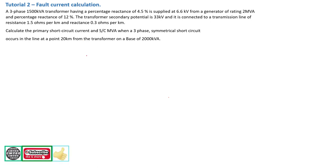This is tutorial 2. The problem statement says: a three-phase 1,500 kVA — that's 1.5 MVA — transformer having a percentage reactance of 4.5% is supplied by a 6.6 kV generator rated at 2 MVA with a percentage reactance of 12%. The transformer's secondary potential is 33 kV, making it a step-up transformer — stepping up from the generator for transmission.